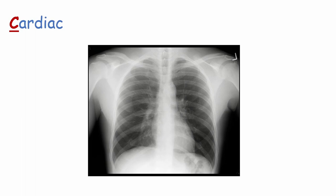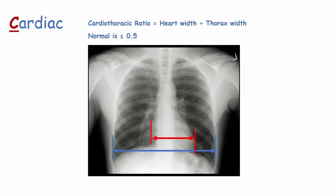Cardiac refers to the heart. We should check that the heart borders are clearly visible, as they can be obscured by underlying lung pathology such as consolidation, a tumour, or pulmonary oedema. The aortic knuckle should also be clear and not enlarged — an enlarged aortic knuckle could represent an aortic dissection, which would be a surgical emergency. We then need to check the heart size by measuring the cardiothoracic ratio: we divide the heart width by the thorax width. If this is over 0.5 on a PA film, the patient has cardiomegaly.